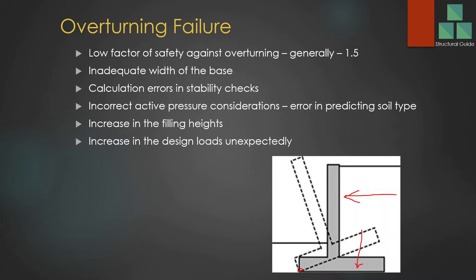The lever arm on the overturning side remains the same but the resisting lever arm may reduce. Calculation errors may also be a reason. Incorrect active pressure estimation is another cause — the pressure on the retaining wall is due to active pressure, which is the active pressure coefficient multiplied by the density of soil multiplied by the height. It is a triangular pressure applied on the wall and must be estimated correctly, as it is based on soil type and friction angle. Incorrect estimation will lead to incorrect stability checks and potential failure.